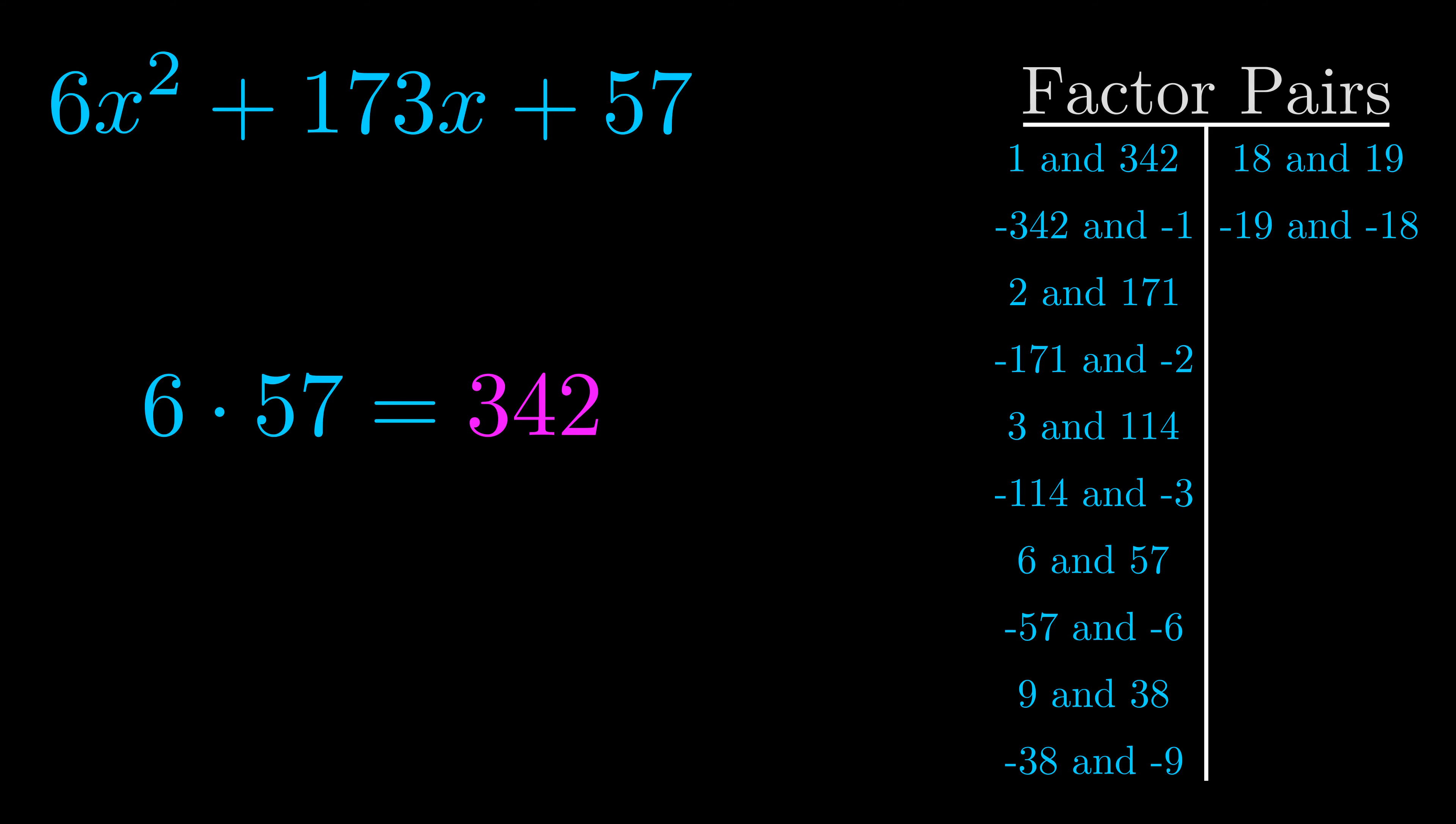The b value is the coefficient on the x term. That's the middle term, the one that we haven't done anything with yet. And really this is the only factor pair that we need.